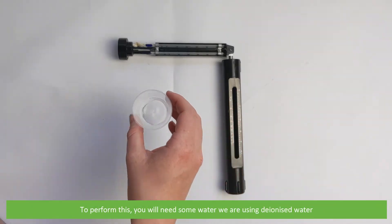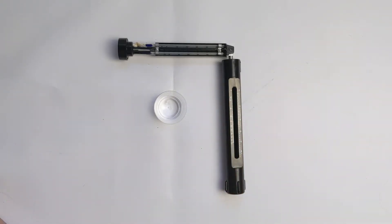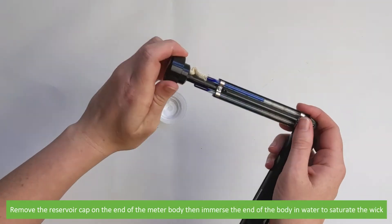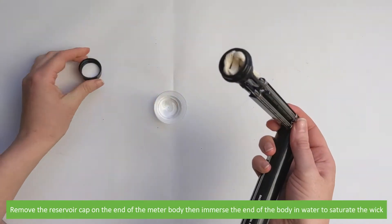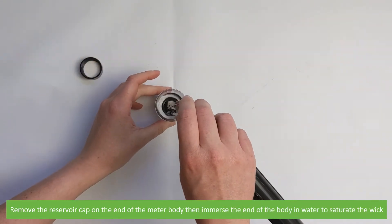To perform this, you'll need some water. We're using deionized water. Remove the reservoir cap on the end of the meter body, then immerse the end of the body in water to saturate the wick.